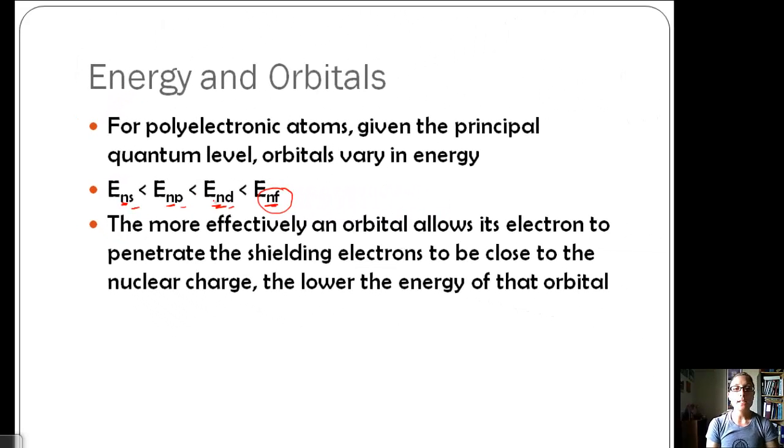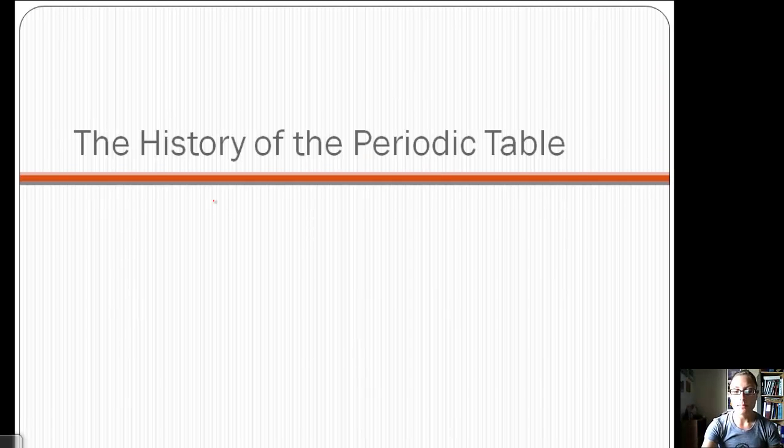The more effectively an orbital allows its electron to penetrate the shielding electrons to be close to the nuclear charge, the lower the energy of that orbital. The better that outer electron is at being attracted by the nucleus, the lower its energy. F is really shielded, so it's got higher energy.